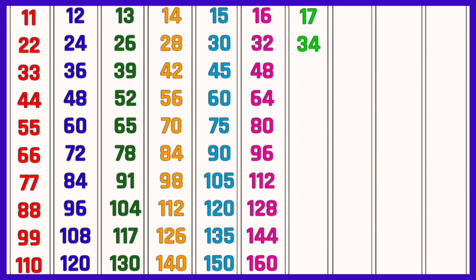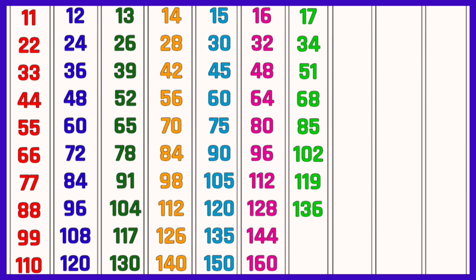Table of 17: 17 ones are 17, 17 twos are 34, 17 threes are 51, 17 fours are 68, 17 fives are 85, 17 sixes are 102, 17 sevens are 119, 17 eights are 136, 17 nines are 153, 17 tens are 170.